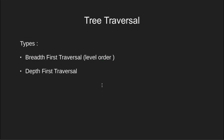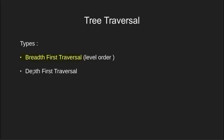We broadly classify traversing into two ways: the breadth first traversal and the depth first traversal. These techniques are a general way of traversing a graph, and since a tree is a special form of graph, we can use them.